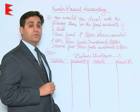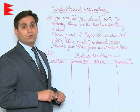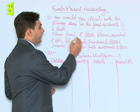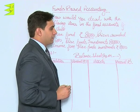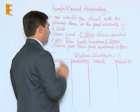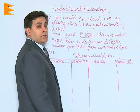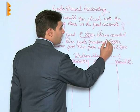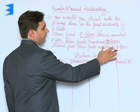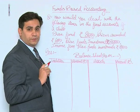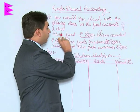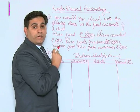Let us understand this by taking a few examples. How would you deal with the following items while preparing the final accounts of a club? The items include: a prize fund of rupees 80,000, prices awarded during the year worth rupees 6,000, prize fund investments of rupees 80,000, and income for prize fund of rupees 8,000.